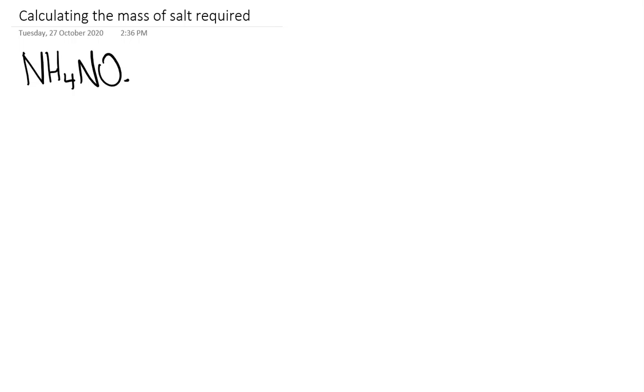So ammonium nitrate, this is the one we can't use because it's explosive, but the molar mass of ammonium nitrate calculating off the periodic table is 80.049 grams per mole. You're going to have to work out the molar mass for each of your salts off the periodic table.